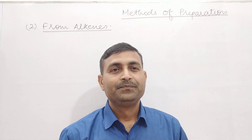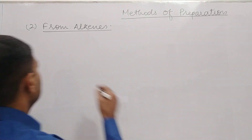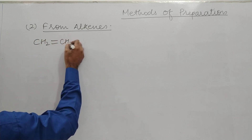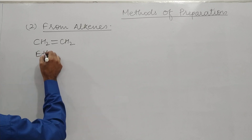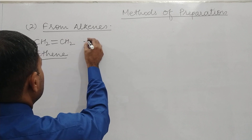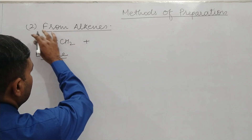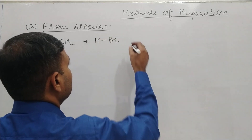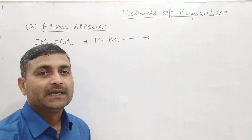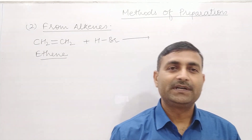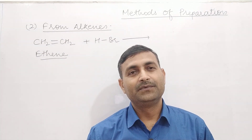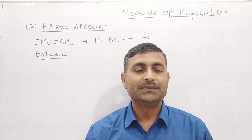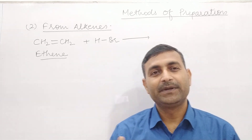If we talk about alkenes, the simplest alkene we can write is CH2 double bond CH2. Now, you know that the alkene has 1 sigma bond and 1 pi bond. The pi bond is weak, so it is broken easily — it breaks quickly. And alkenes undergo addition reactions.